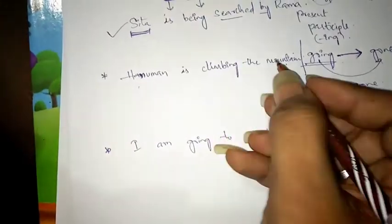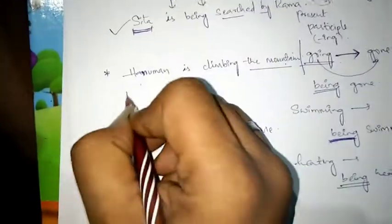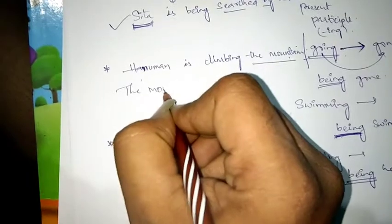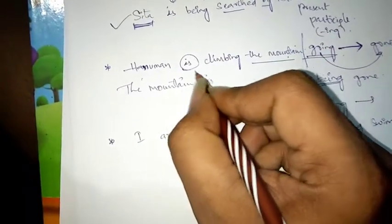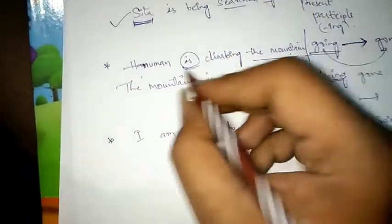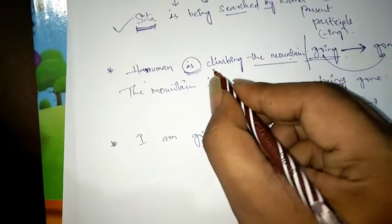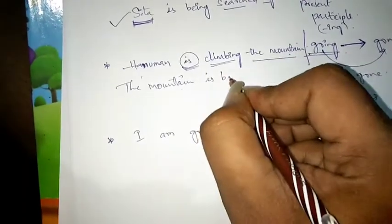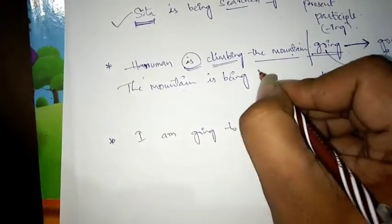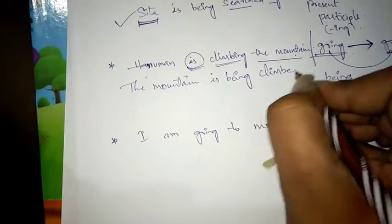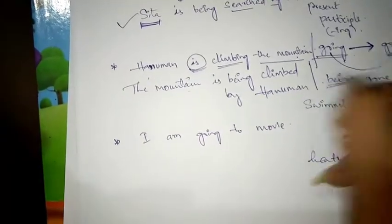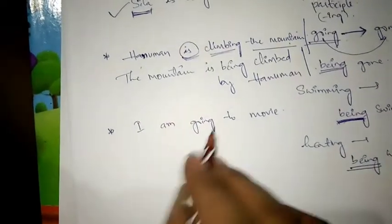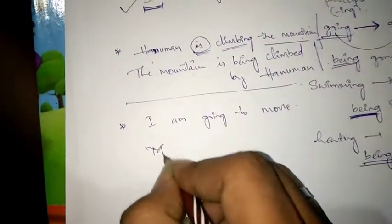'Hanuman is climbing the mountain.' The mountain is the object, so it becomes the subject. The mountain is singular, so we use 'is'. Changing V4 into V3 using 'being': 'The mountain is being climbed by Hanuman.'